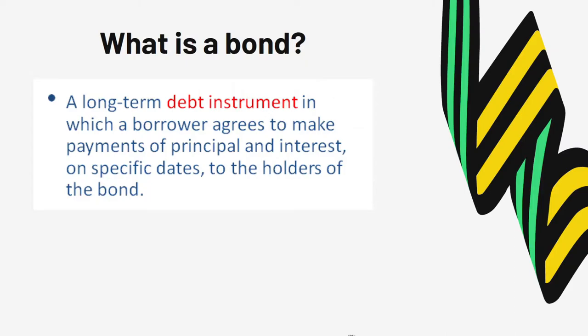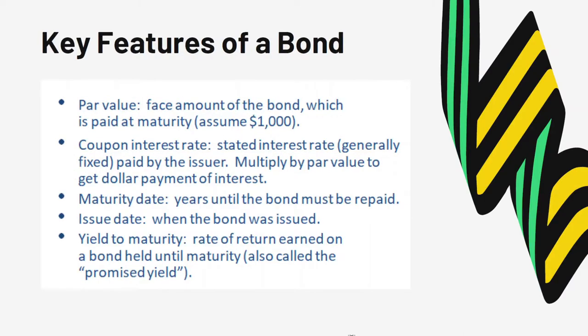A bond is a long-term debt instrument and a fixed income security, meaning it offers a fixed payment every period. It provides both interest payments, and at maturity these debt instruments will provide the principal repayment to the bond investors. Key characteristics of a bond: the par value is one thousand dollars, or in Thailand one thousand baht. Every period bonds will offer a fixed coupon payment equal to the stated interest rate multiplied by the face value of the bond.